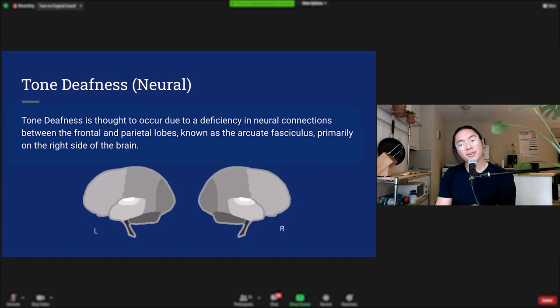So how does it work? Tone deafness is thought to occur due to a deficiency in neural connections between the frontal lobe and the parietal lobe on the right side of the brain. On the left side of the brain you have two areas: the first in your frontal lobe is known as Broca's area and it's responsible for speech production. The second is known as Wernicke's area and it's responsible for speech understanding. There's a white matter pathway that connects the two of these inside the brain called the arcuate fasciculus that lets us understand what we're saying and produce it at roughly the same time.